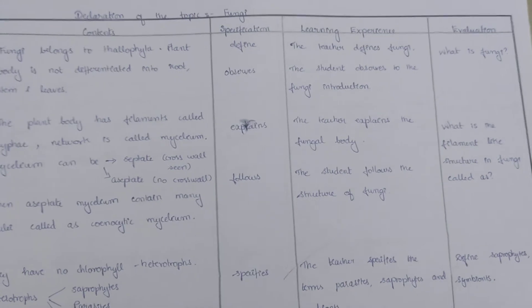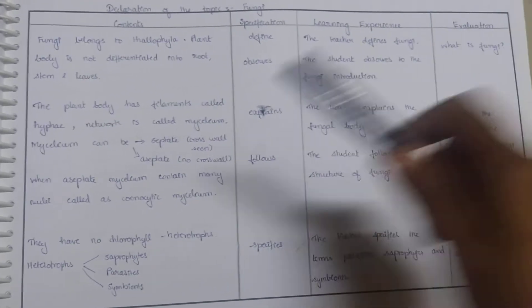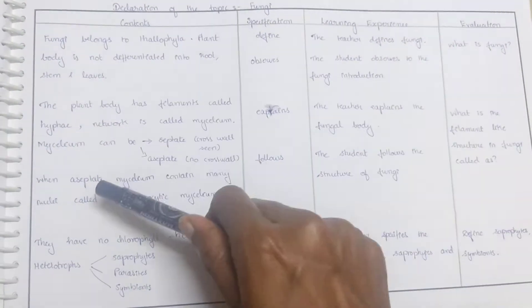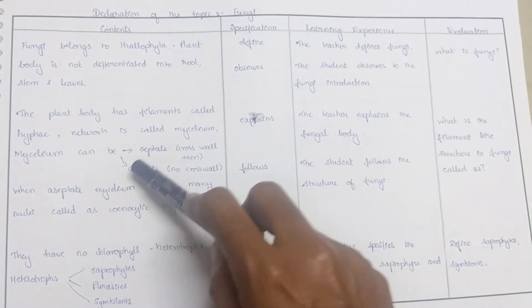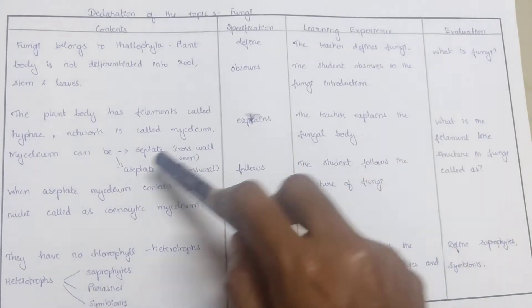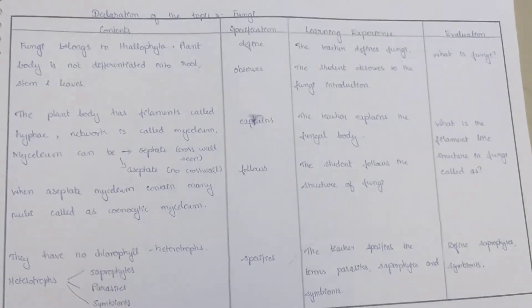Introduction evaluation: what is fungi? The plant body has filaments called hyphae. The network is called mycelium. Mycelium can be septate with cross walls seen, or aseptate where there is no cross wall. When aseptic mycelium contains many nuclei, it is called coenocytic mycelium.